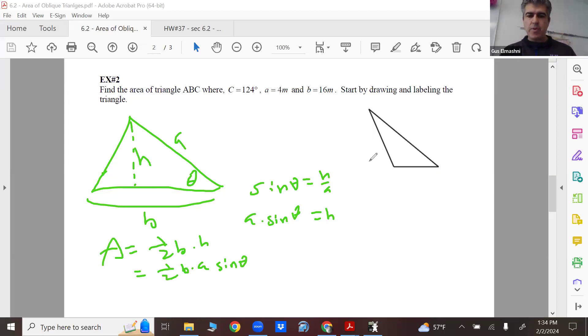So for this case here, that's 124 degrees right here, right? That's angle C, this is little a, little b. Therefore this is going to be 4m and 16m. So what I'm going to do, area equals what? One half times 16m times 4m times cosine of 124 degrees.